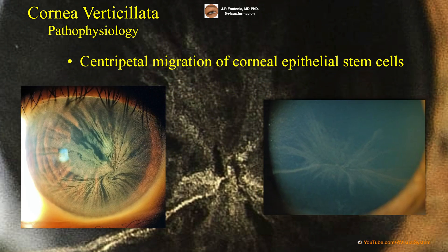The vortex or spiral pattern of cornea verticillata results from the natural centripetal migration of the corneal epithelial stem cells, which are located in the sclerocorneal limbus and laden with deposits. They transit from the limbus to the corneal center as the epithelium undergoes its natural growth and repair.